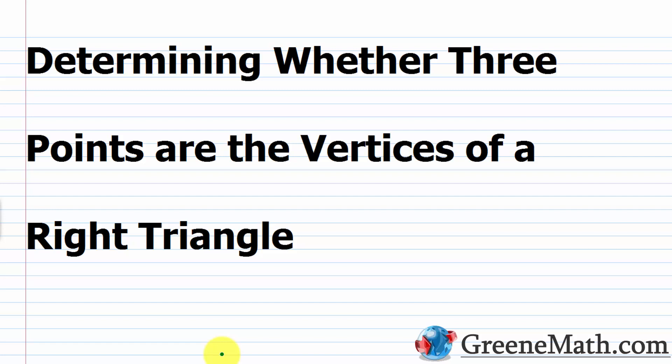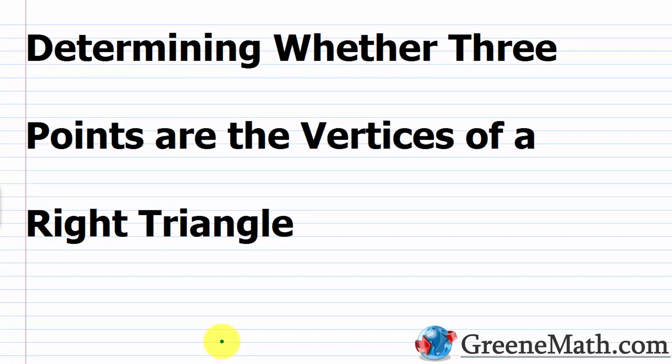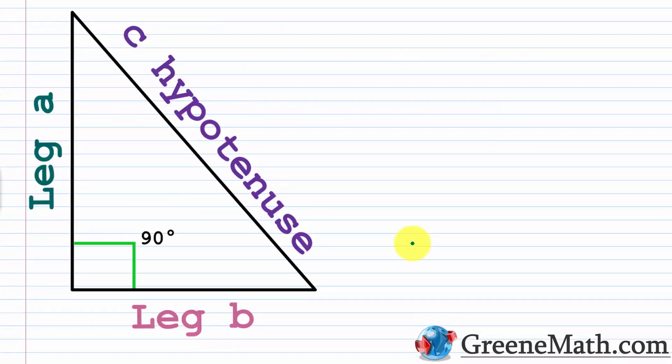In this lesson, we want to look at determining whether three points are the vertices of a right triangle. In our last lesson, we learned about the distance formula. This formula allows us to calculate the distance between any two points on the coordinate plane. Basically, we derive this formula from the Pythagorean formula, which relates to the sides of a right triangle.